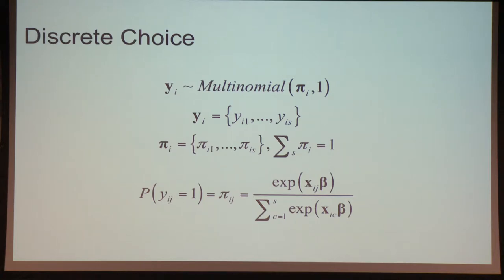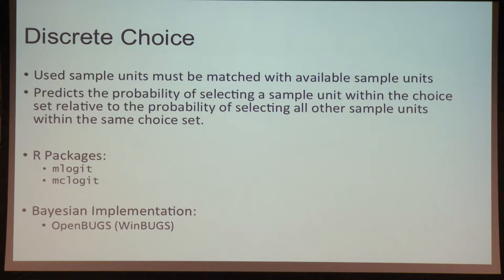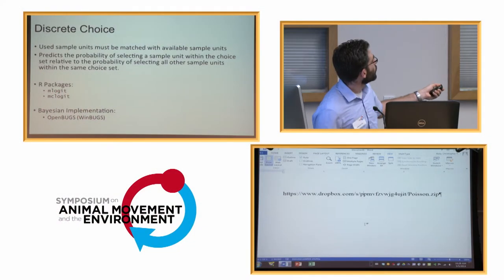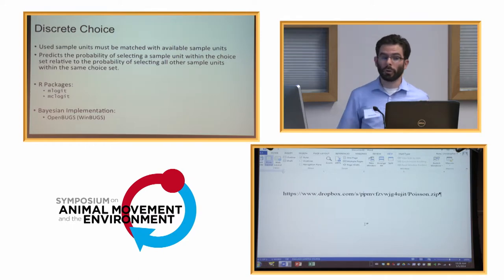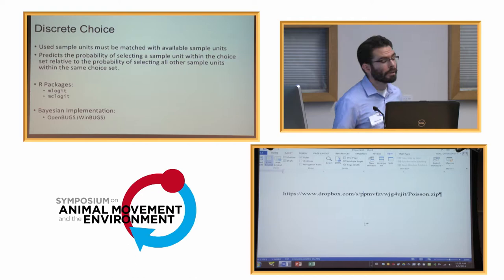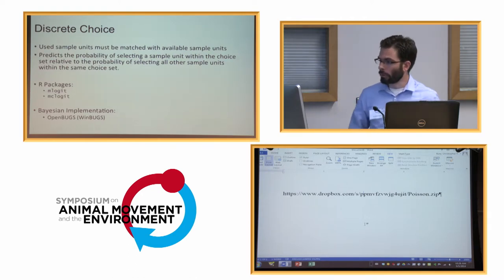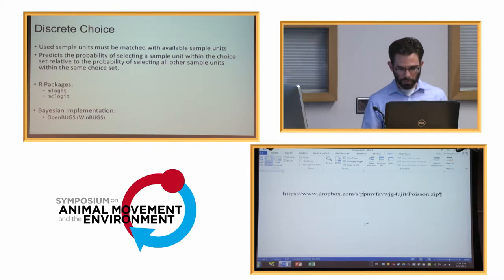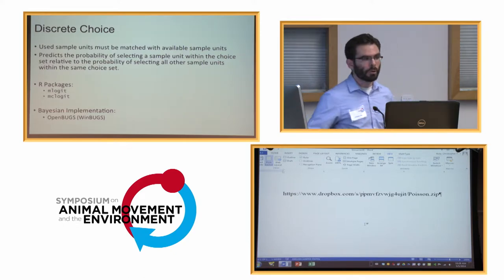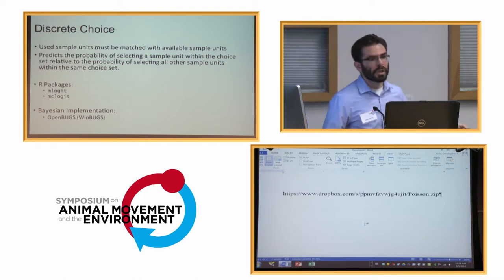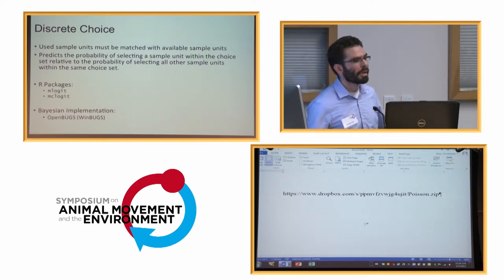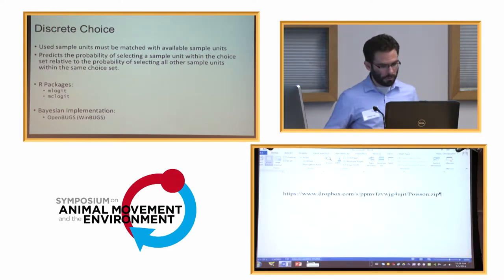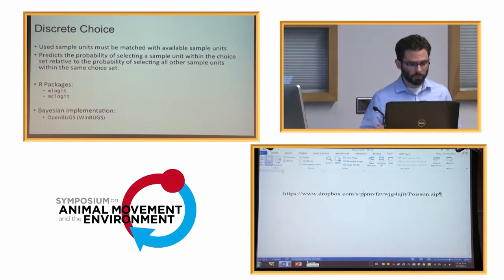Let's play around with a little code for fitting this model. There are a couple of R packages we can use to fit a discrete choice model. The one I'll talk about today is the mLogit function within R. There's also mcLogit — mixed conditional logit — which can fit random intercept models, though not random slopes. Let me pull up some R code for this.